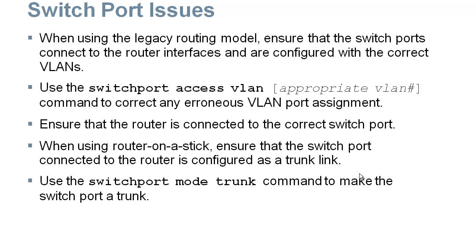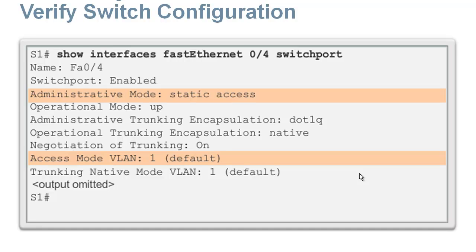Make sure you have switch port mode trunk configured if you're doing router on a stick — so switch port mode trunk. Use show interface, pick the specific interface you're having a problem with and add the switch port keyword, and it will tell you what mode it's in — static access, encapsulation dot1Q, trunking on, and so on.